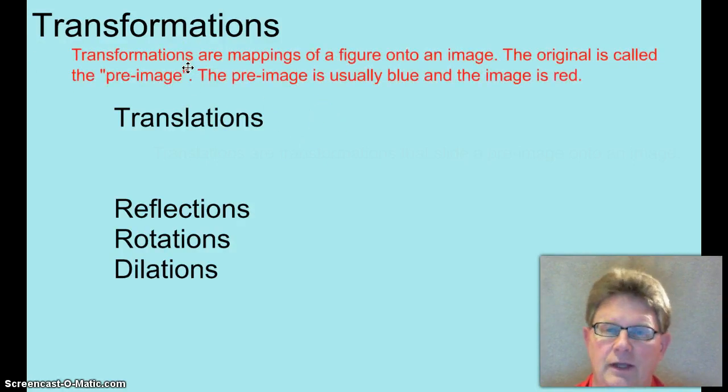I'll read it as you write it, and then go ahead and pause after I'm done reading. Transformations are mappings of a figure onto an image. The original is called the pre-image, and in the book the pre-image is usually blue and the image is red. So go ahead and write that down.